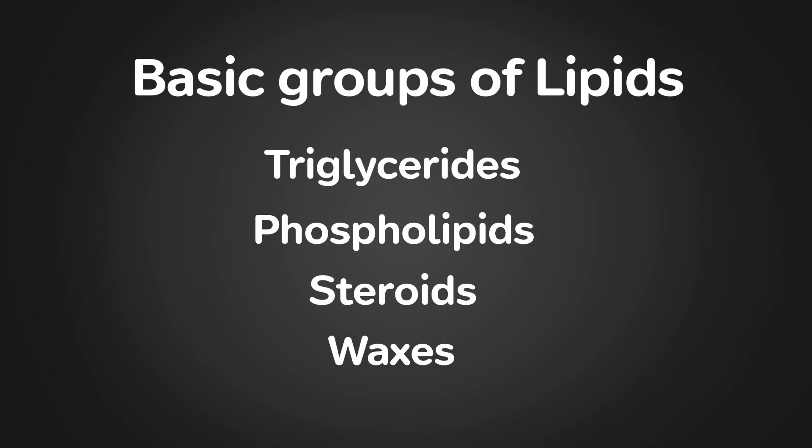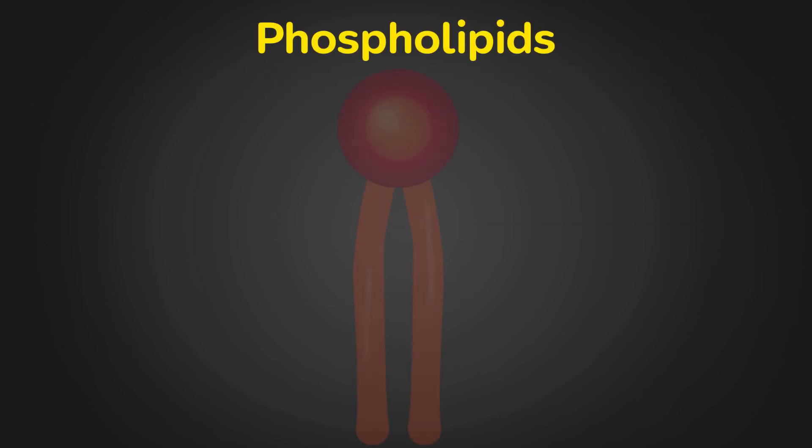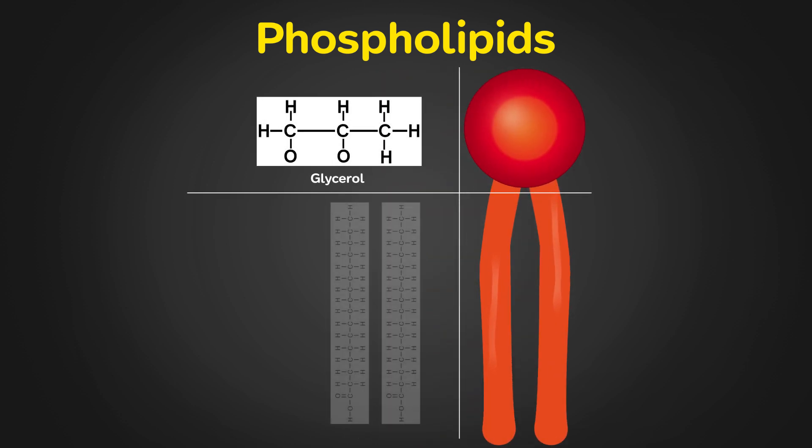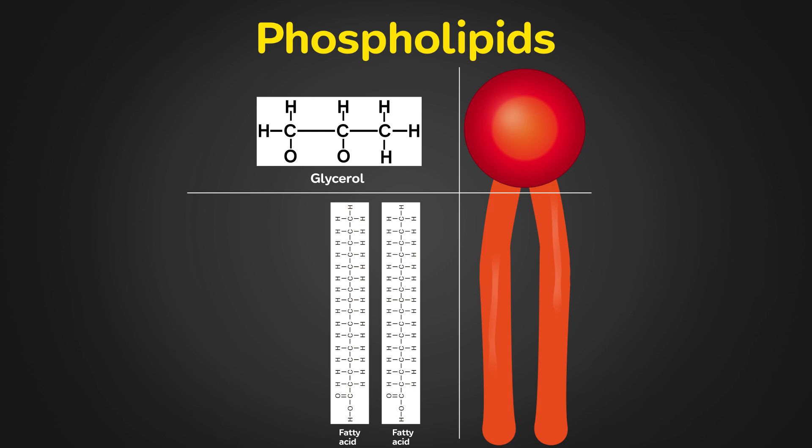The second category of lipids is phospholipids. They are similar to triglycerides. They contain glycerol and two fatty acids. The difference between them is that a phosphate group rather than a third fatty acid is attached to the third carbon of glycerol.